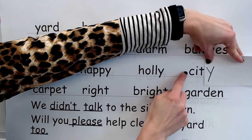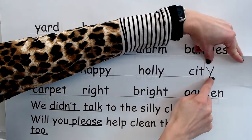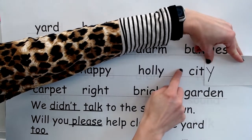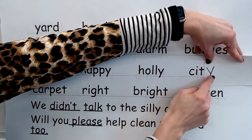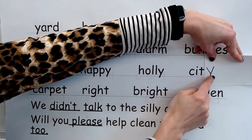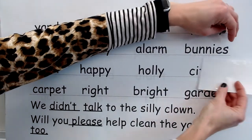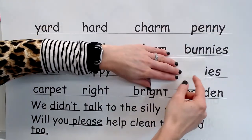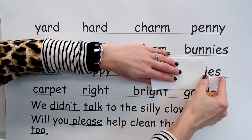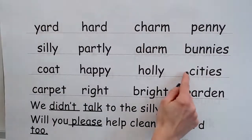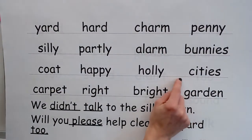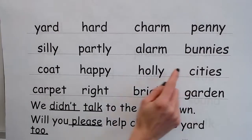Two-syllable word: sound — E, word — city. Yes, city. Change Y to I, add E-S. Ending — ease. New word — cities. Yes, cities.